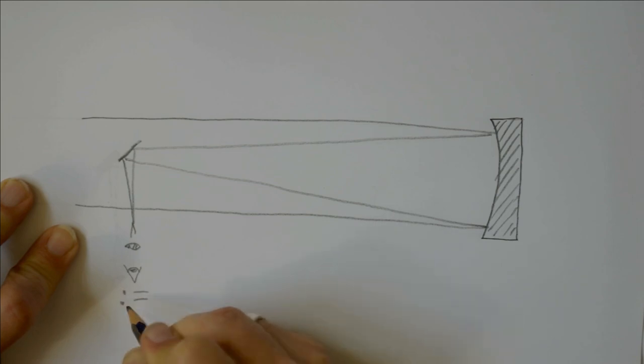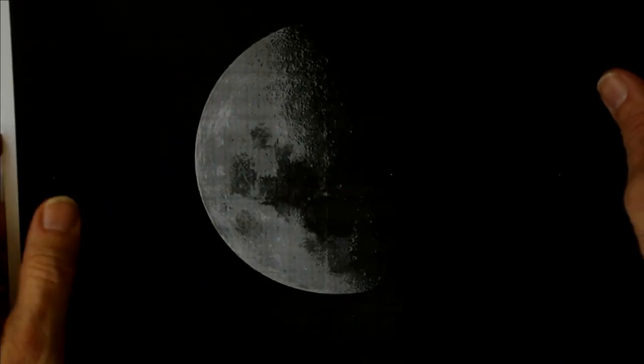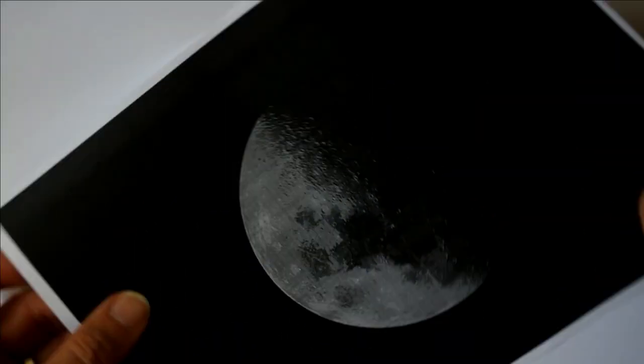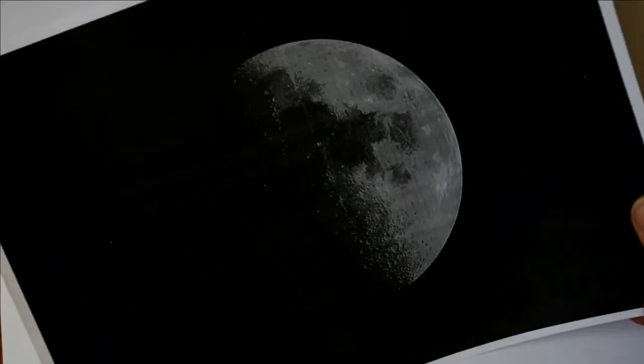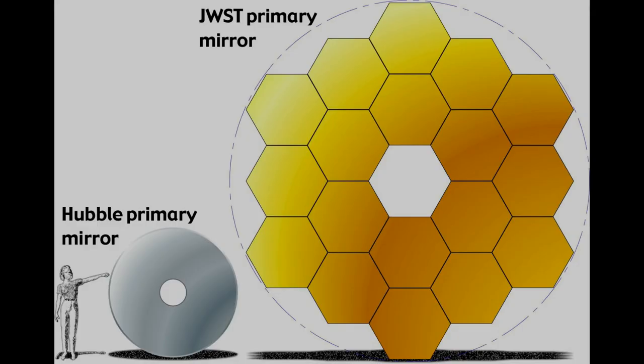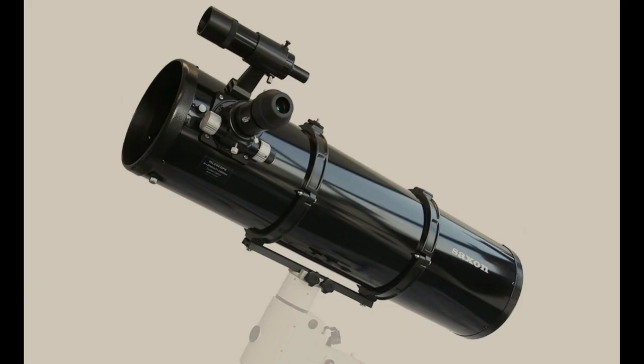It worked a whole lot better than Galileo's telescope but the image was still the wrong way up. But that really doesn't matter when you're looking at the sky. I mean, who can tell? And mirrors are a whole lot cheaper than lenses to make and maintain. So that's the modern Newtonian telescope.